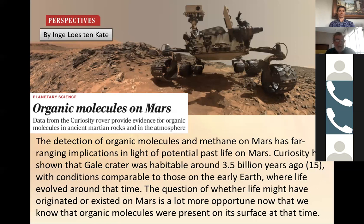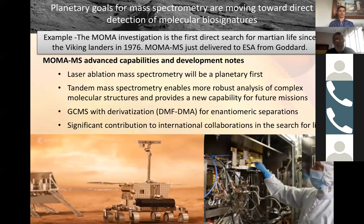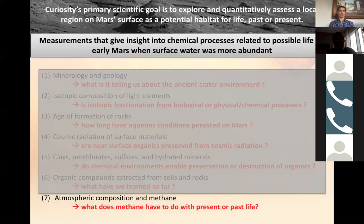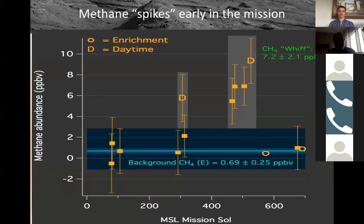We have wet chemistry experiments — nine cups containing a liquid chemical agent — that we're getting ready to use on Mars to pull out complex fatty acids more readily. When we published these organic results in Science, the perspective written by astrobiologist Inge Loes ten Kate stated: 'The question of whether life may have originated or existed on Mars is more opportune now that we know organic molecules were present on its surface.' The message is: they haven't all been destroyed — there's still something there.